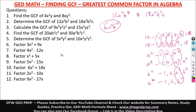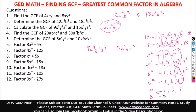Number three: GCF of 9x³y²z² and 15x²yz³. For 9 and 15: factors of 9 are 1, 3, 9; factors of 15 are 1, 3, 5, 15 — greatest common factor is 3. For the variables: x³ and x² share x²; y² and y share y; z² and z³ share z². So the GCF is 3x²yz².